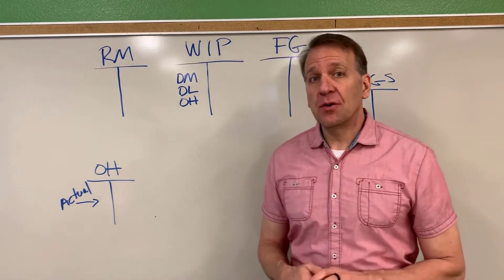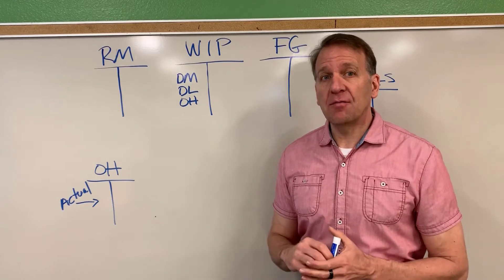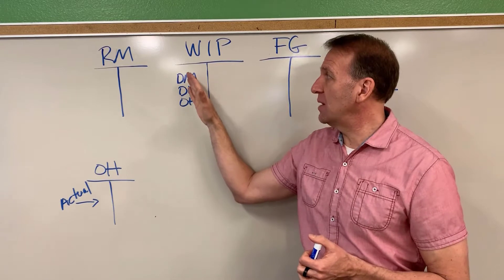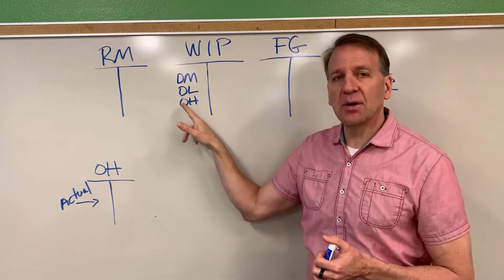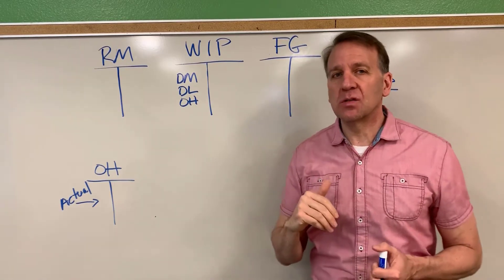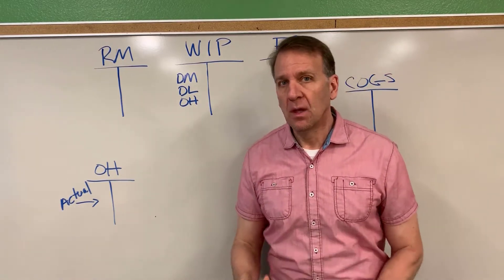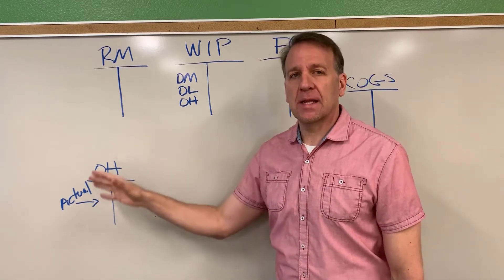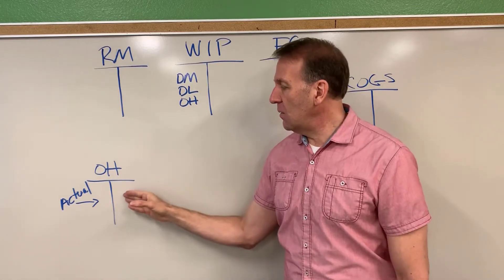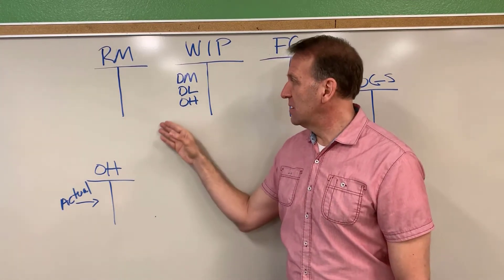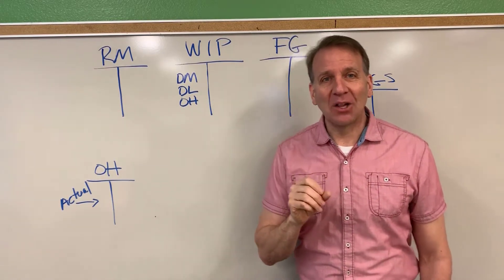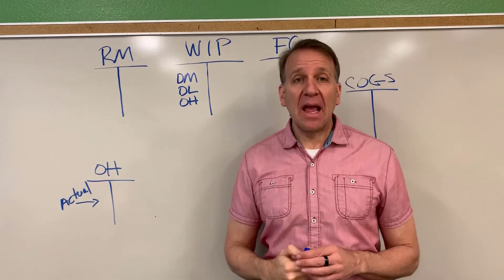In the previous videos, we went over the cost flows of a manufacturing plant. We saw how costs went from raw materials into work in process, where we have materials, labor, and overhead, then made their way into finished goods and cost of goods sold once they were sold. In this process, we looked at the overhead account and saw how actual costs come in and come out on an allocated basis. That's what we're going to do today — look at that allocated basis and how we do that.